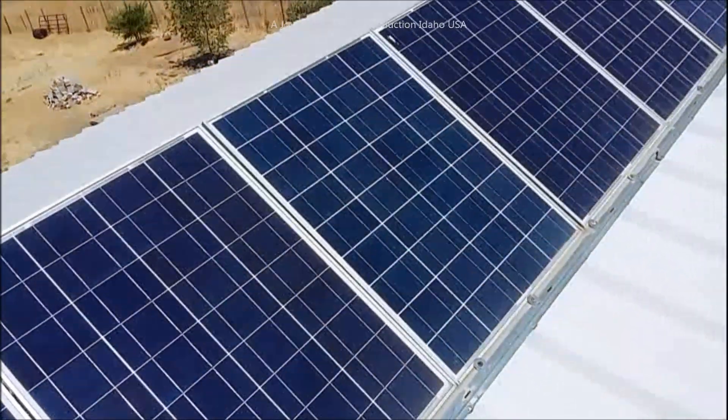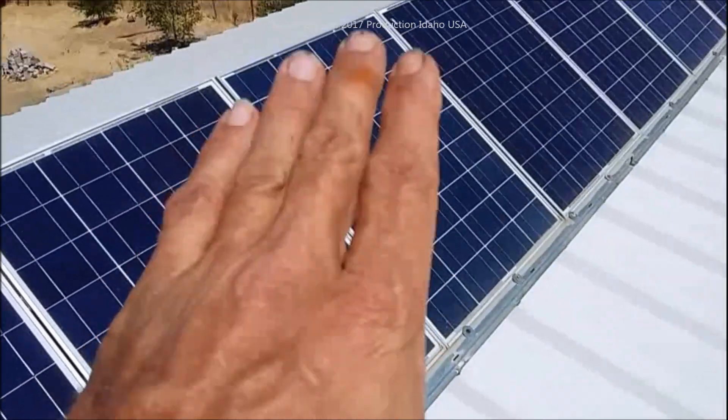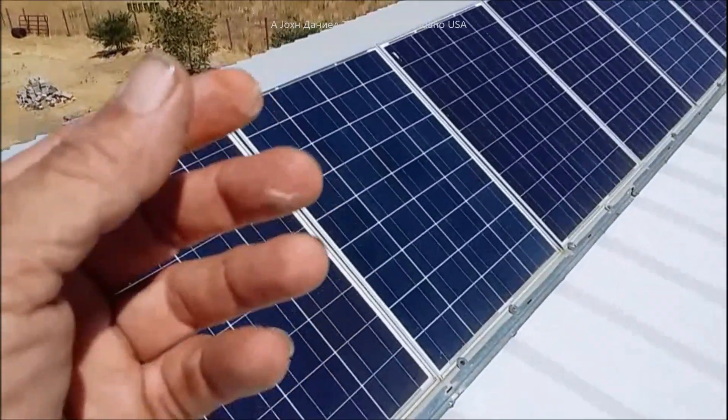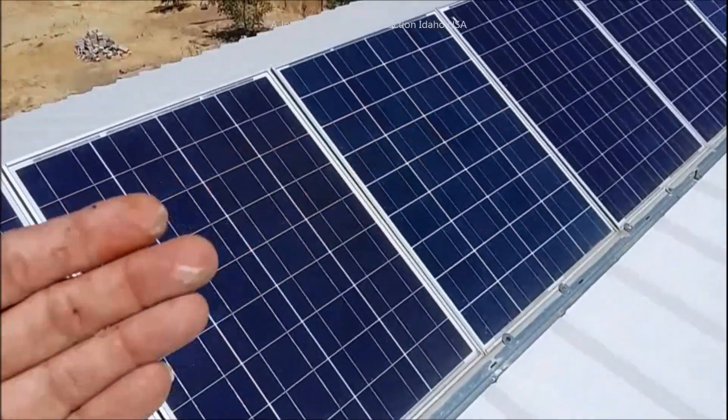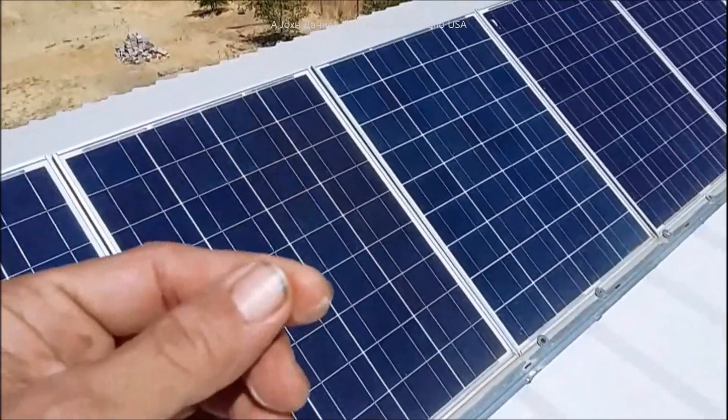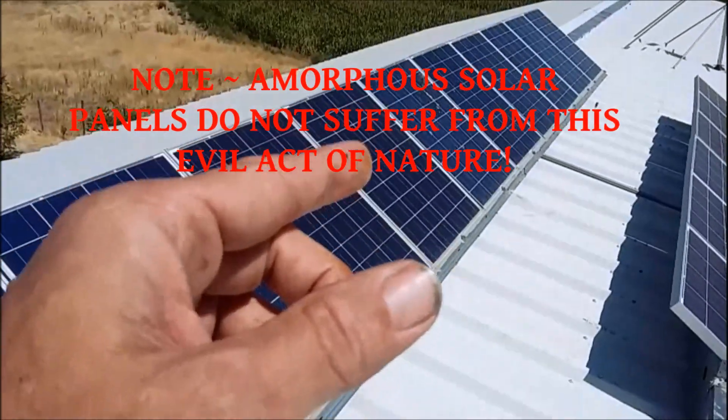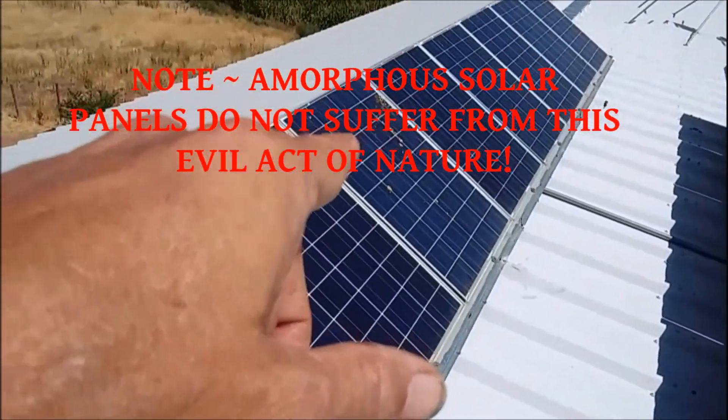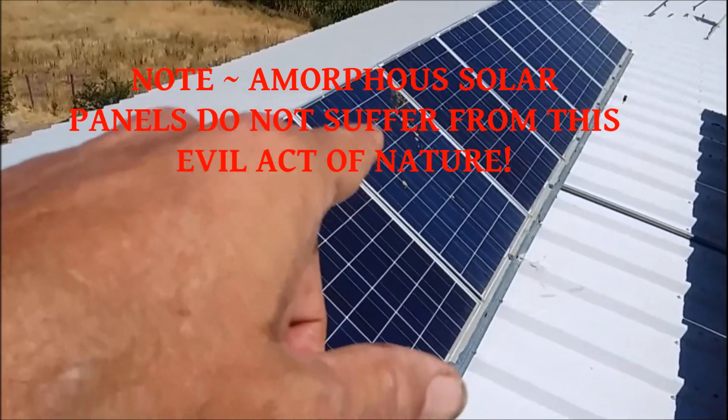That 45 watt panel burned out. It got excessively dirty and got a lot of bird shit on it. And what happened is the other panels pushed against its diodes. So instead of the panel being damaged, it was the diode that failed.